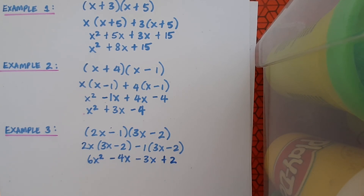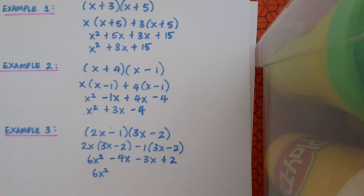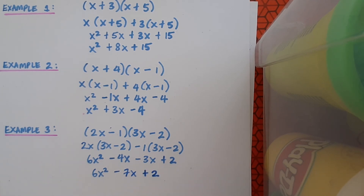Now I want to simplify by putting like terms together. I've got 6x squared — there's no other x squared term, so that stays as is. Then minus 4x minus 3x gives minus 7x. Finally, the plus 2 at the end has no like term, so I write down plus 2. This is my finished working for example 3.